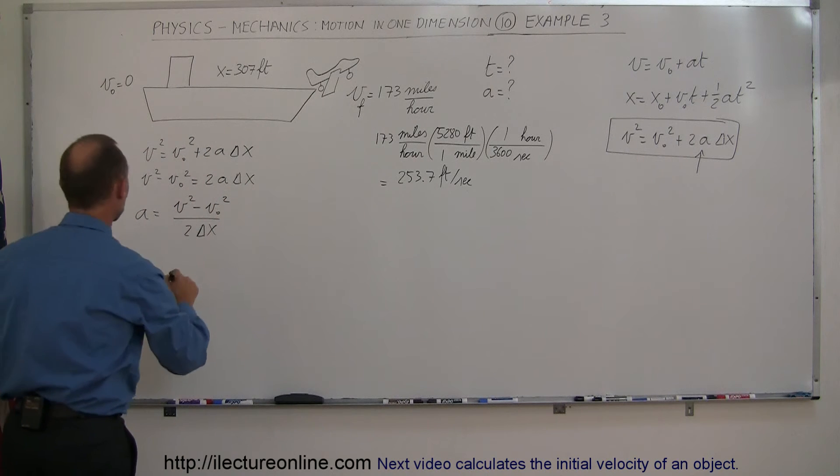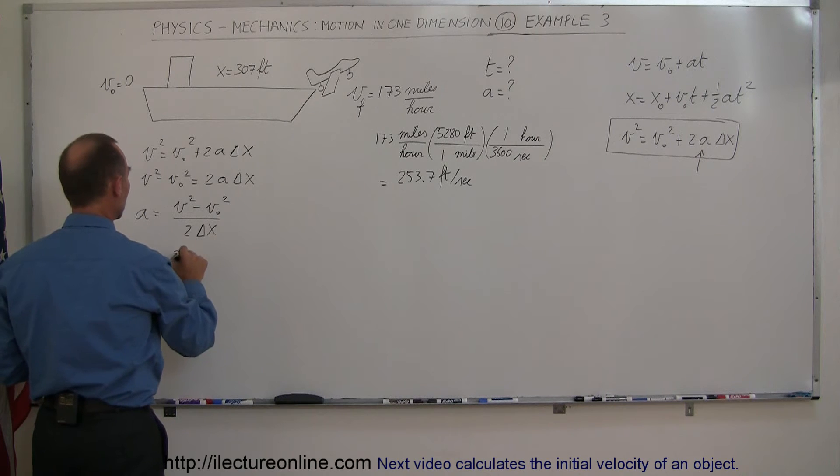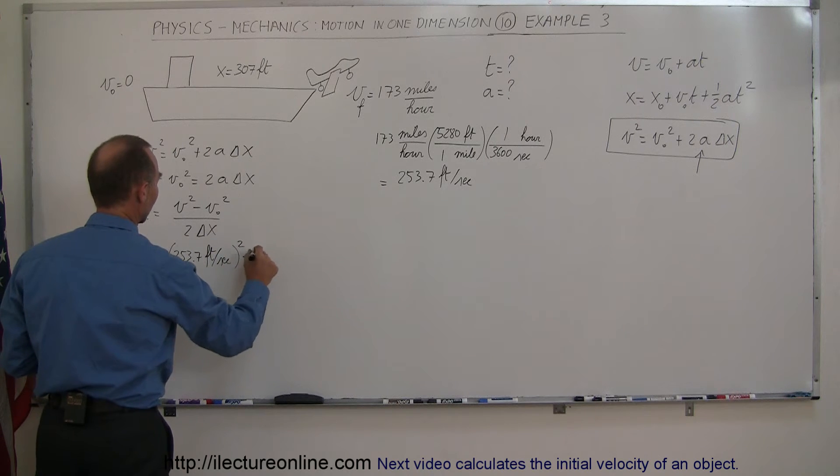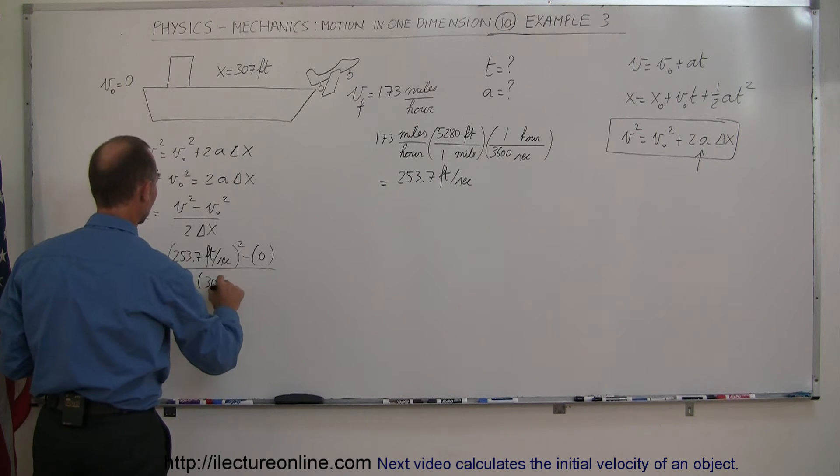Now let's plug all that in here. So final velocity would be 253.7 feet per second. We have to square that. Initial velocity is 0, starts from rest, times 2 times the distance of 307 feet.